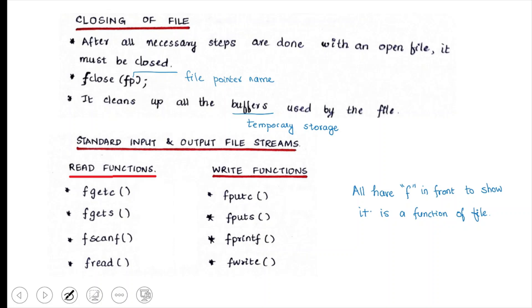To read and write to a file, we have standard input and output functions. There are certain read functions and write functions, and all of them have the letter 'f' in front to indicate they are file functions.